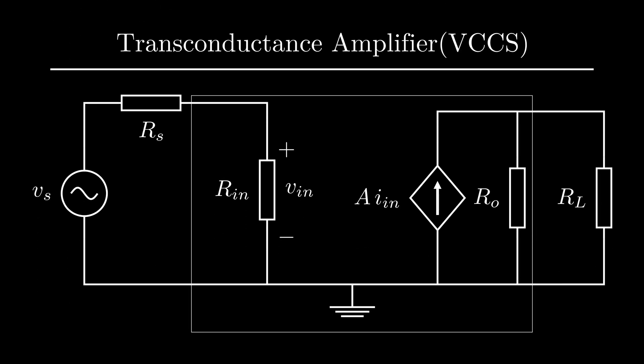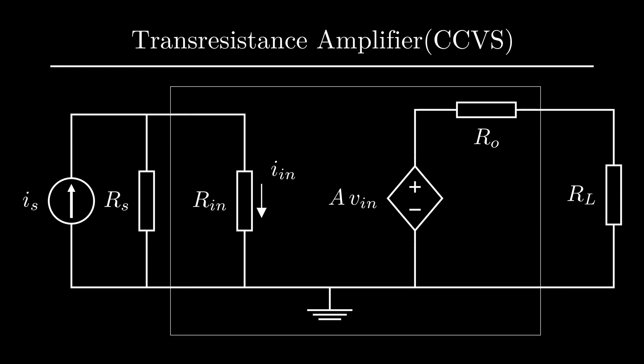A transconductance amplifier senses a voltage and gives a proportional current at the output. It can be modeled with the voltage controlled current source. Transresistance amplifier senses a current at the input and gives us a proportional voltage. It's modeled with the current controlled voltage source.